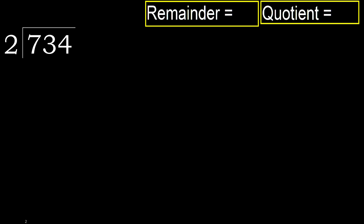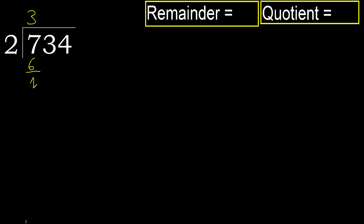734 divided by 2. 7 — 2 multiplied by which number is nearest to 7 but not greater? 2 multiplied by 4 is 8, which is greater. 2 multiplied by 3 is 6, which is not greater. Subtract: 7 minus 6 is 1.